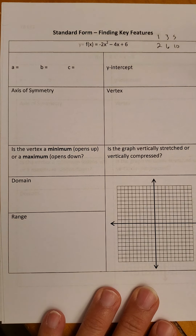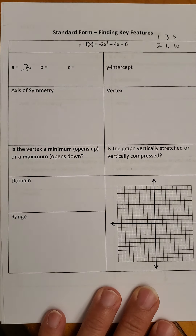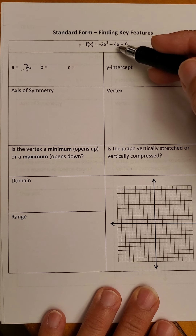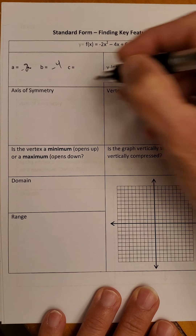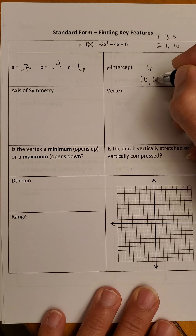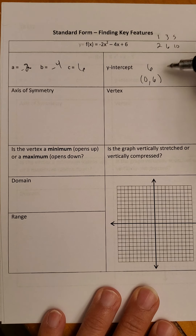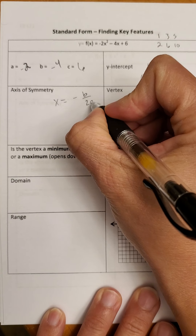If you don't understand what I mean by pattern, go watch that video, because that's the method I'm using today to graph once we find our vertex. The key is you have to know what A, B, and C are — watch your signs. A is the number in front of X squared, which is negative 2. B is the linear coefficient multiplied by X, which is negative 4. And C is 6, so our Y-intercept is 6.